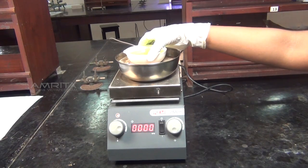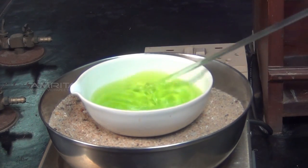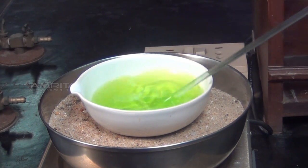Heat the solution in the china dish over the sand bath. To avoid crust formation on the side of the dish, stir the solution continuously with a glass rod.